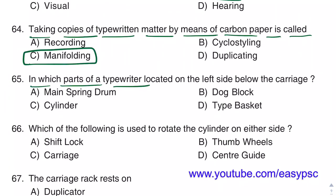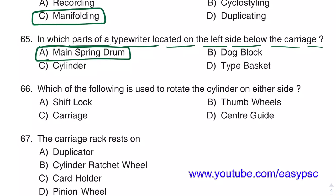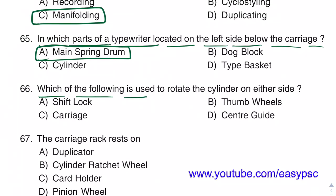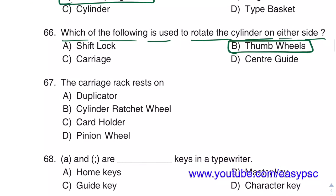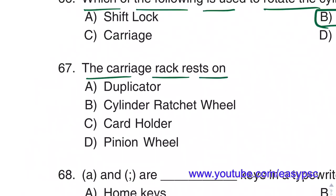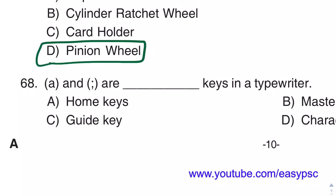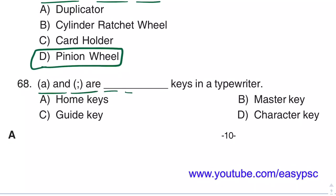Thumb wheels are used to rotate the cylinder on either side. The carriage rack rests on the Pinion wheel. Semicolon and dash are guide keys in a typewriter.